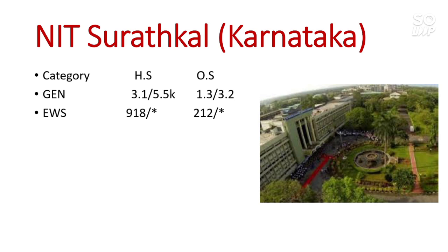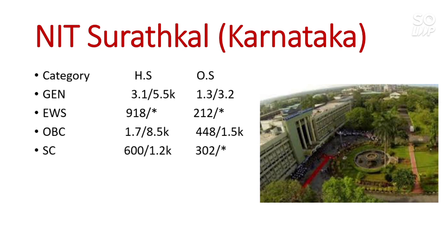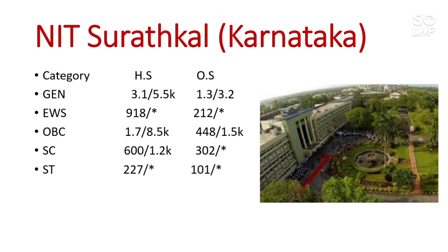For OBC at NIT Surathkal: home state male 1,700, female 8,500; other state male 448, female 1,500. For SC: home state male 600, female 1,200; other state there is no seat for female — wherever you see a star mark that means that category is not reserved in that branch. For ST: home state male 227, other state male 101, and no seat for female.